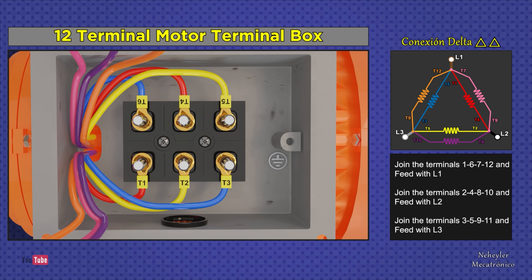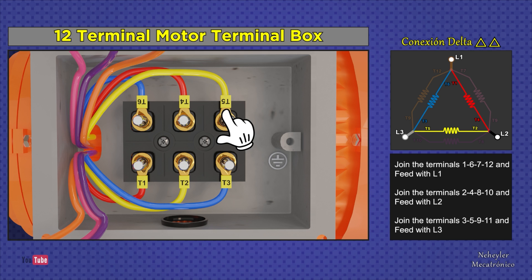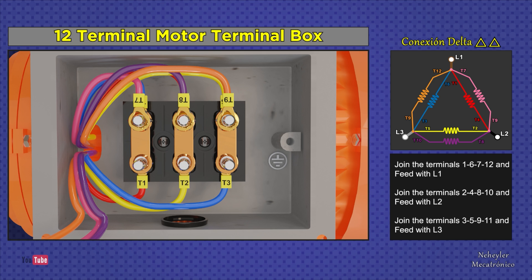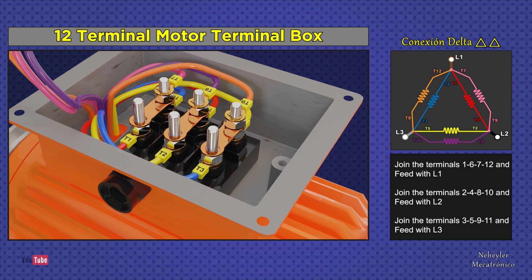Now let's see how this connection is made in the motor terminal box. In the box we have a base with six terminals where we will place the coil terminals. Terminals T1, T2, and T3 go on one side, and on the other side T5, T4, and T6 in that order. The cable labels may only be numbered, but it's the same thing — just look at the numbers. Next, we place metal plates to join the terminals, then place terminals 7 to 9 in that order. The idea is to form three groups of four terminals each.